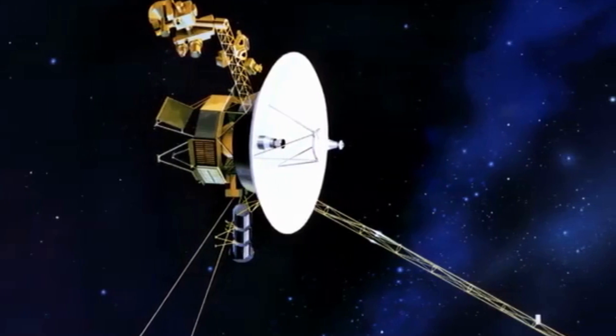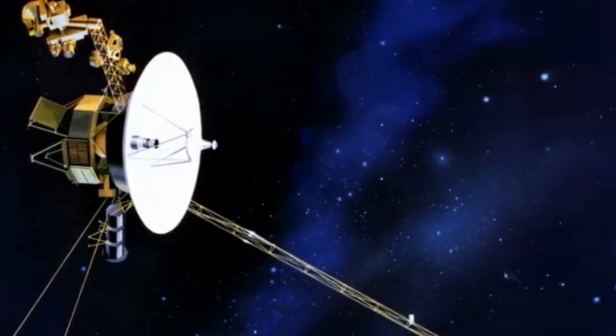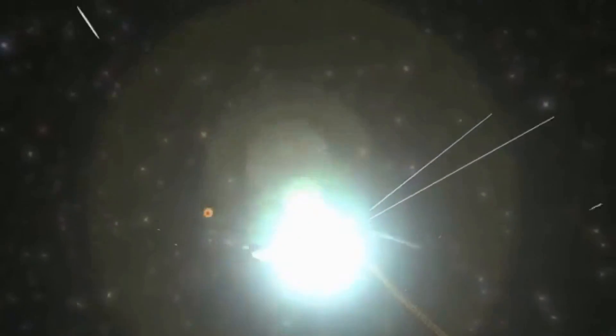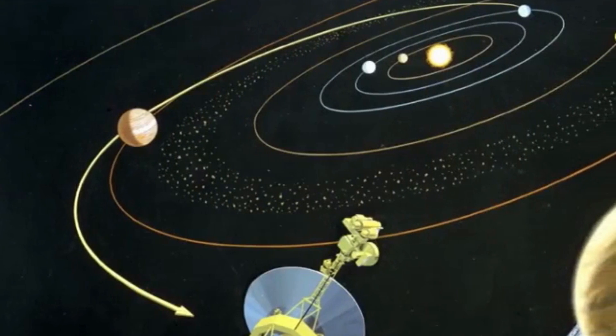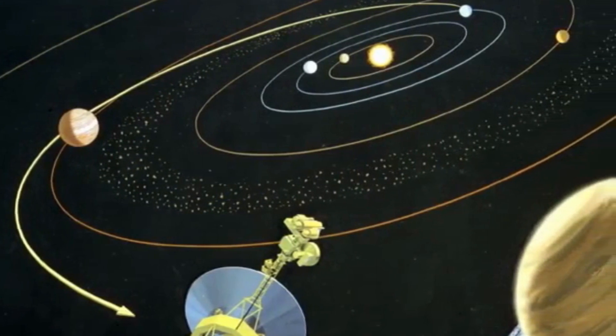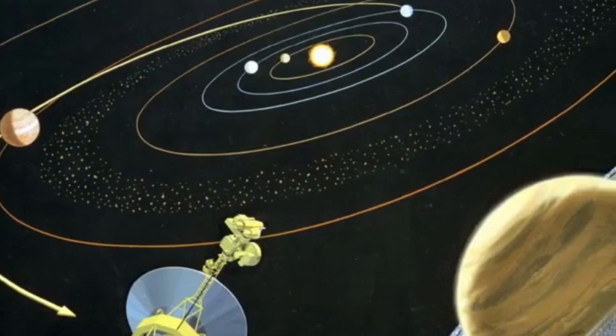7. The Voyager 1 spacecraft, launched in 1977, is the farthest man-made object from Earth. It entered interstellar space in 2012, becoming the first human-made object to do so.